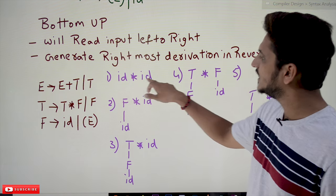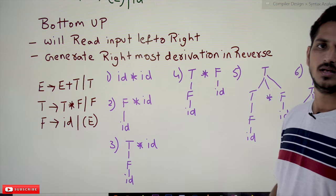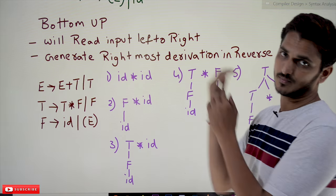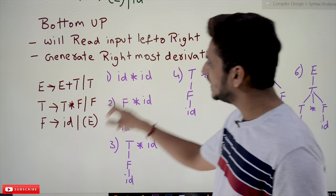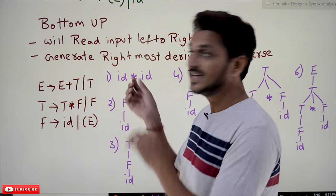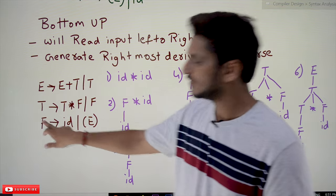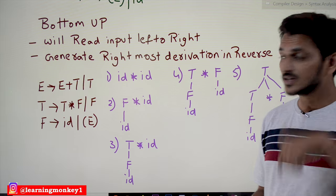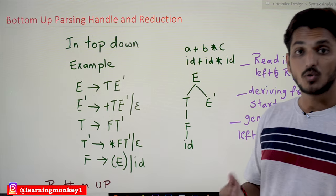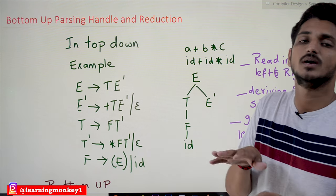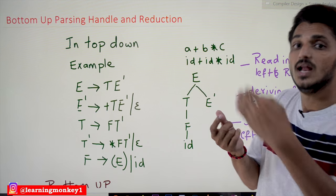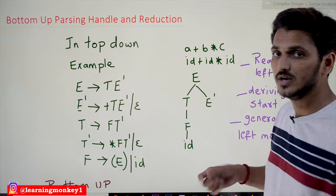If we want to identify the input 'id star id', bottom-up parsing will read the input from left to right. 'id' is identified — since F → id, this id is reduced to F. That's why it got the name 'reduction'. In bottom-up parsing we are going to check the input and reduce a term to the non-terminal on the left-hand side of the production.